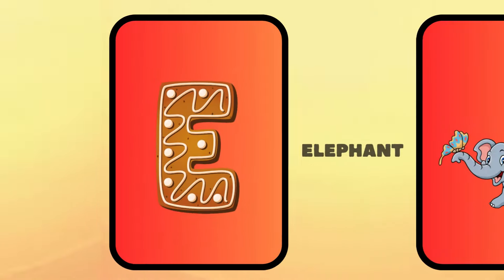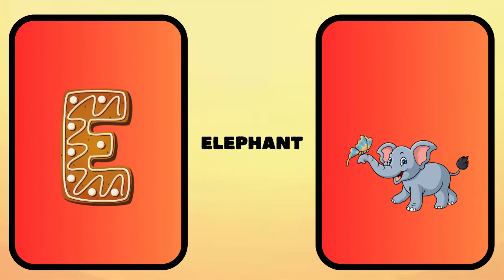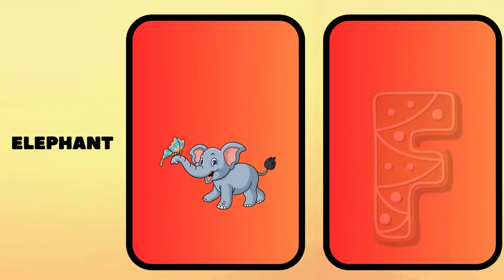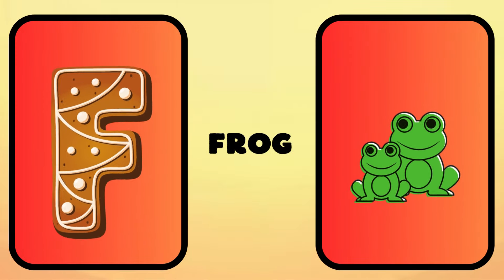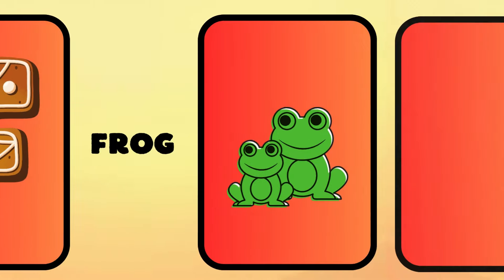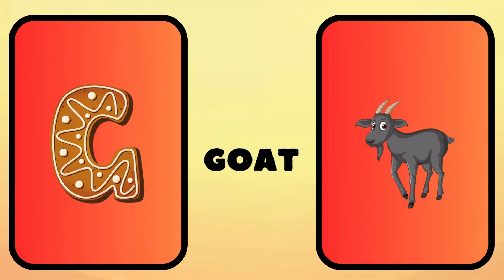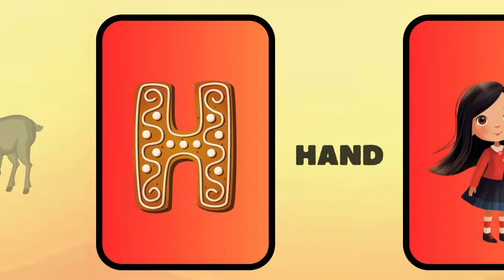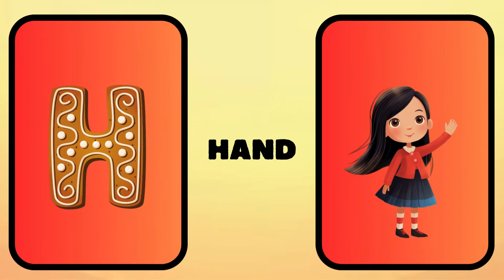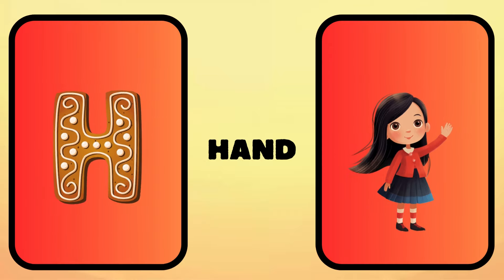E is for elephant, e-e-elephant. F is for frog, f-f-frog. G is for goat, g-g-goat. H is for hand, h-h-hand.